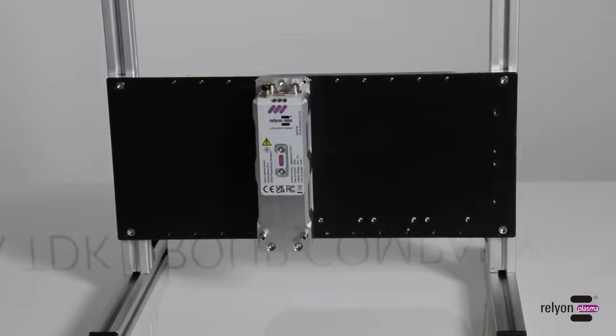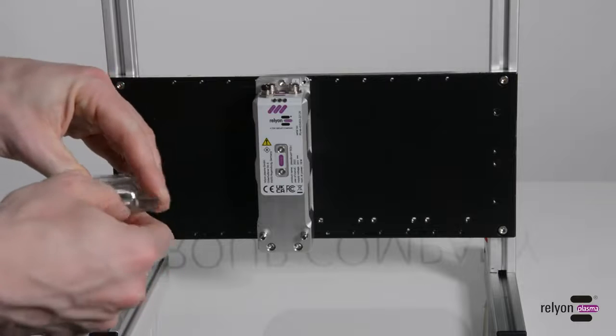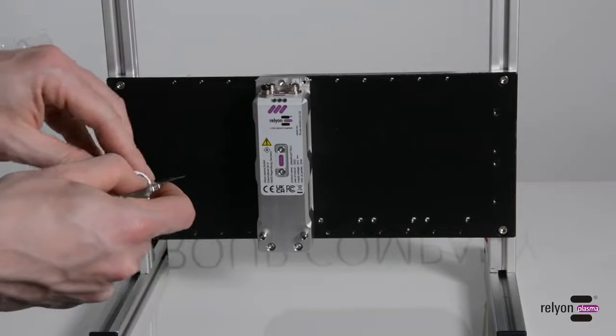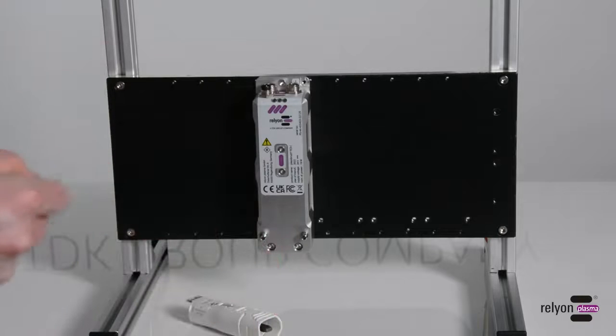Next, insert the desired module into the module carrier. To do this, remove the module from the packaging. Make sure that the locking ring of the module carrier is open. The red unlock symbol must be displayed for this purpose.